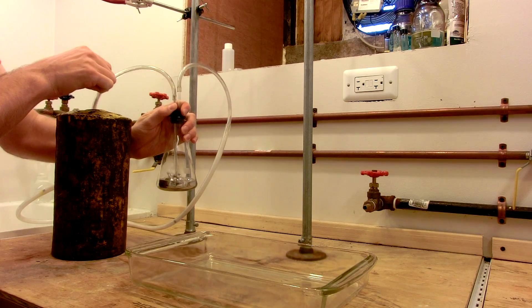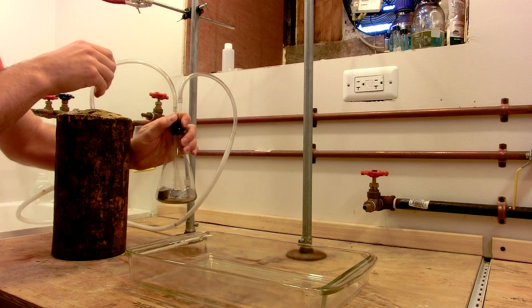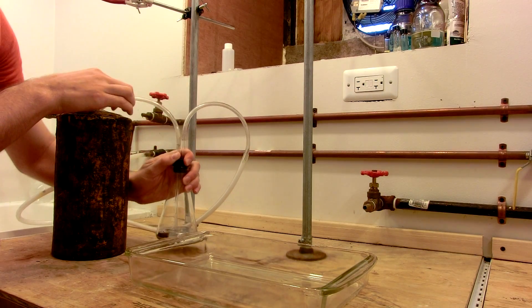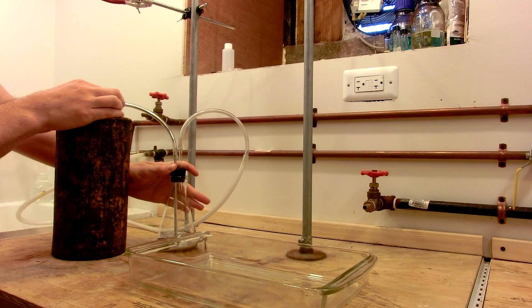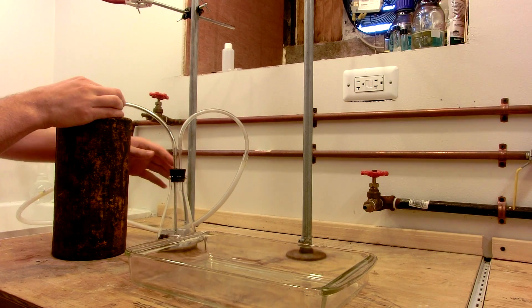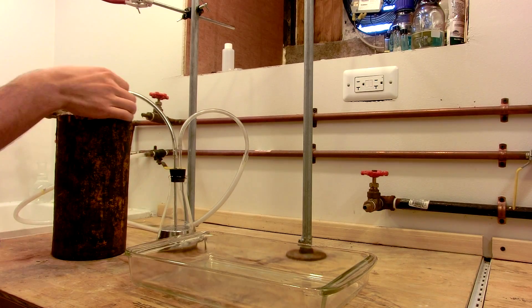And that's liquid mercury filling up this flask. It's very heavy. I'm going to put the flask down so I don't want the bottom to fall out of it. That there is about six or seven pounds of mercury. So I'll turn the vacuum off.